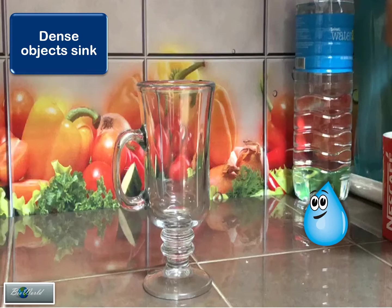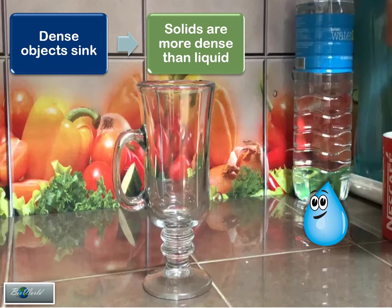dense objects sink - anything that is heavy will normally go down the glass. Second point, solids are more dense than liquid. A solid object, because of the molecular arrangement, will naturally be more heavy and so it will be more dense than liquid where the molecules are more loosely arranged.